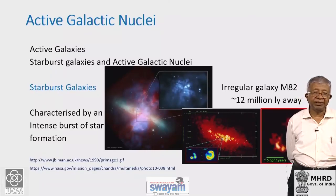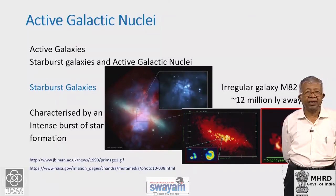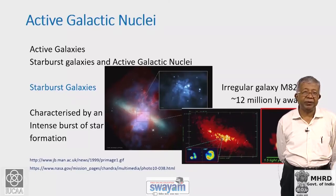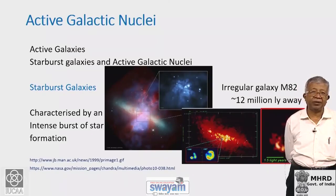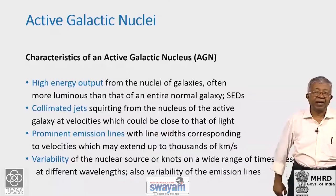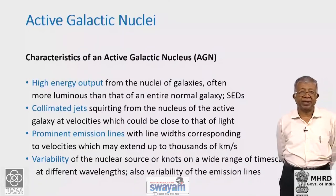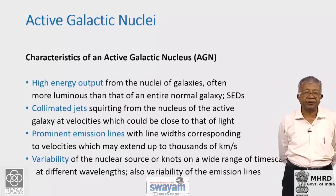Today, in these two lectures, we are going to focus on the second category: active galactic nuclei. Active galactic nuclei have more to do with activity right in the nuclear region, perhaps connected with a supermassive black hole lurking in the centre of these galaxies. Before we go further, let us understand the broad characteristics of an active galactic nucleus.